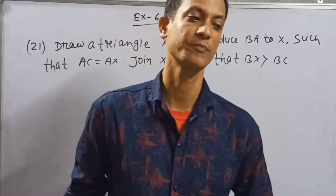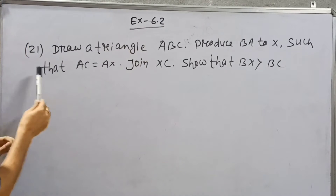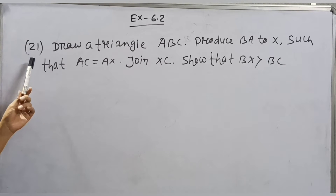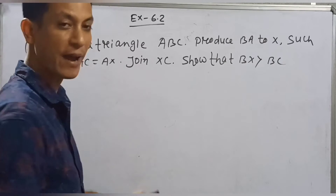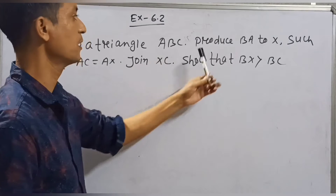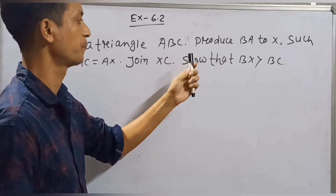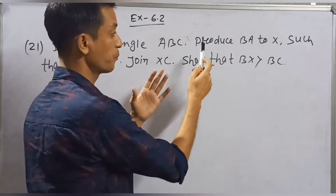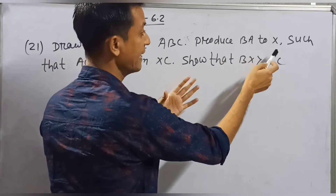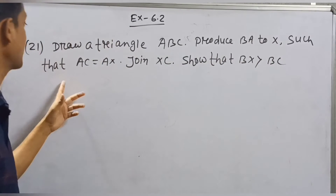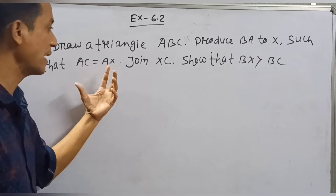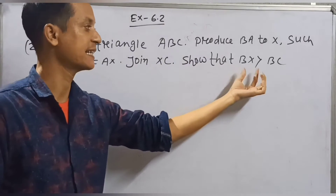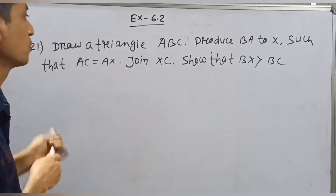Welcome back to my channel. Exercise 6.2, question number 21: Draw a triangle ABC. Produce BA to X such that AC is equal to AX. Join XC so that we can show BX is greater than BC.